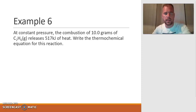All right, let's continue on with example six before we move on to section four. So example six is something that you will need to be able to do on the exam. And so let's read what it said. It says, at constant pressure, the combustion of 10.0 grams of ethane, C2H6, releases 517 kilojoules of heat. Write the thermochemical equation for this reaction.